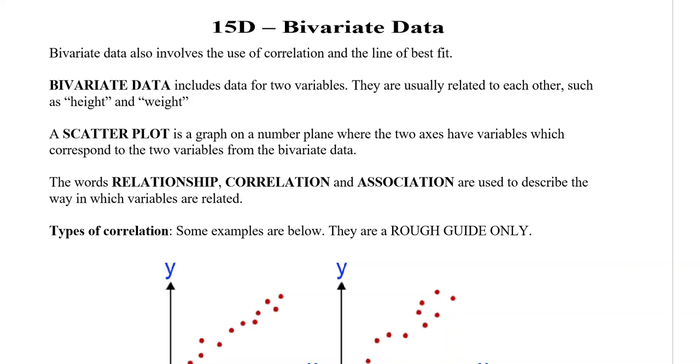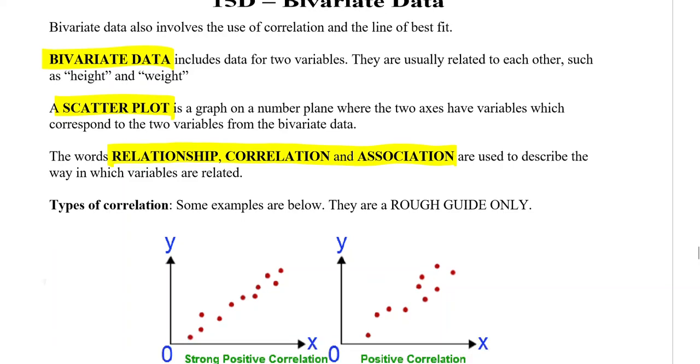15D is about bivariate data, meaning two variables. Bivariate data involves the use of correlation and a line of best fit. It includes data for two variables that are usually related to each other, such as people's height and weight. A scatter plot is the graph where the two axes correspond to the two variables in the bivariate data.